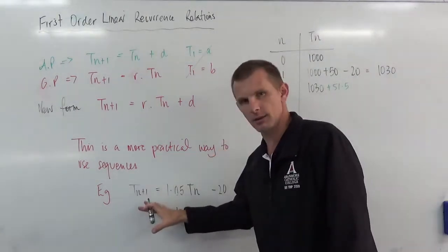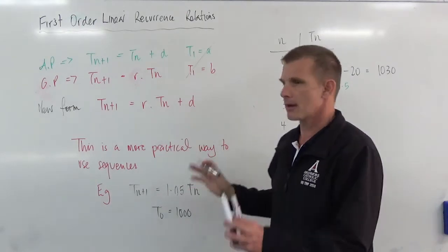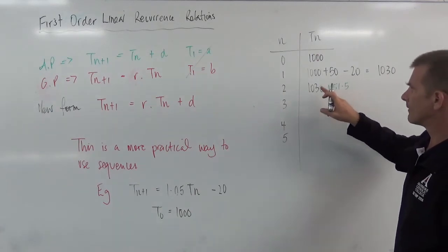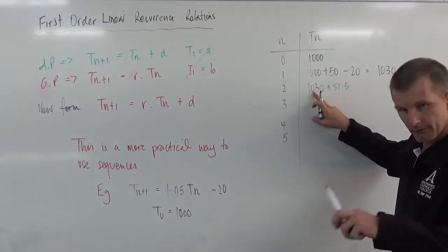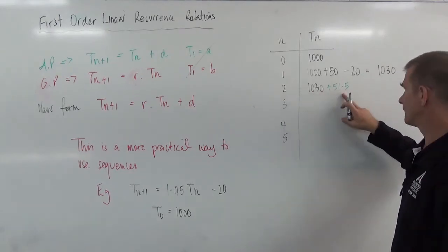Because this is a practical example, I'd have to think, well, am I going to round that up or round that down? But let's just carry through with the numbers for now. 51.5 is 5% of that. Divided by 10 will get you 103. Divide that by 2, 51.5.